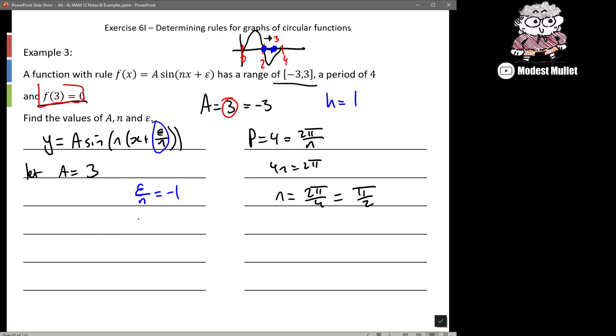And we said n was π/2. So we get ε/(π/2) = -1. So we get ε = -2/π.